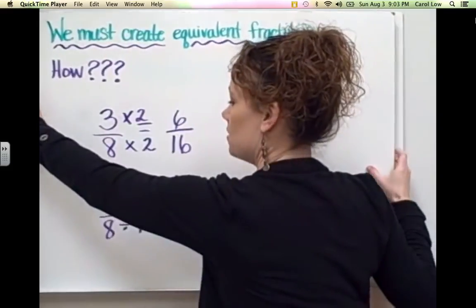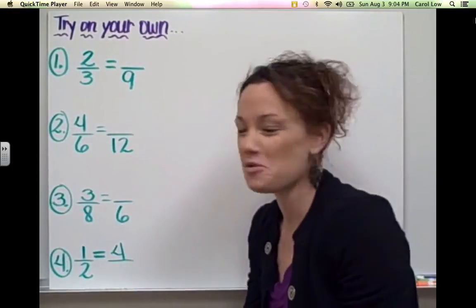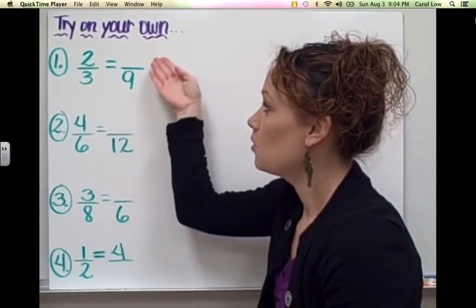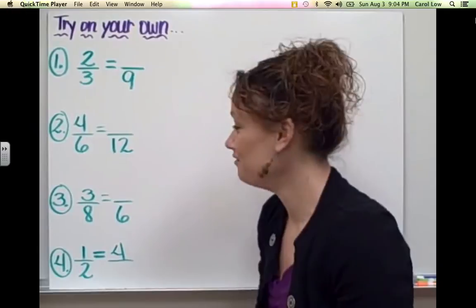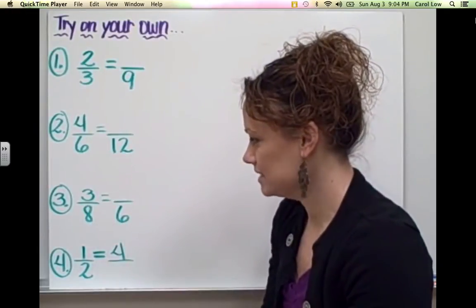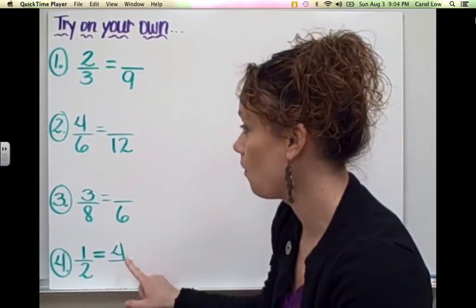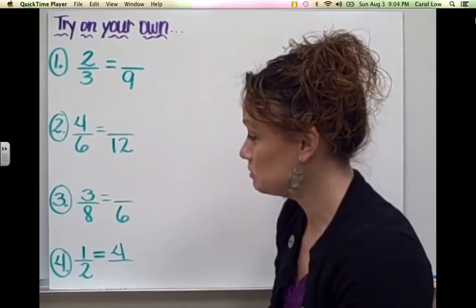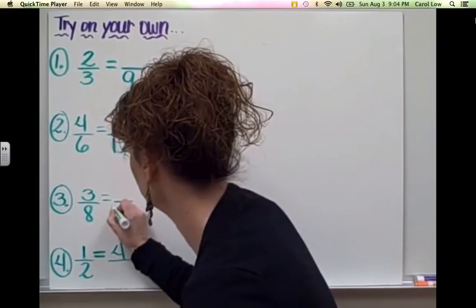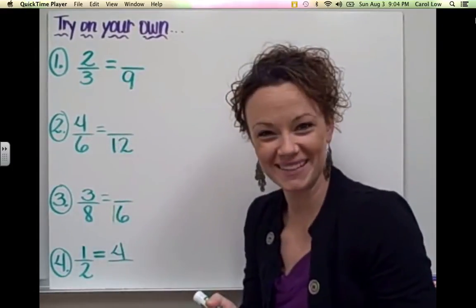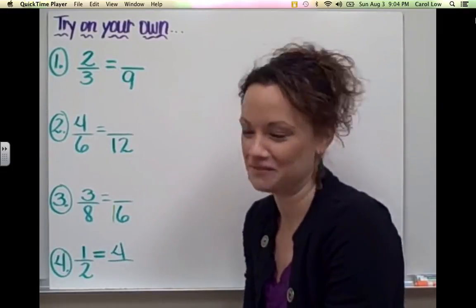It's time for you to try some examples on your own. You may do this in box 3 of your homework sheet. We have 2 thirds being equivalent to something over 9, 4 sixths being equivalent to something over 12, 3 eighths being equivalent to something over 6, and 1 half being equivalent to 4 over something. So try your best with these problems, boys and girls. And you can always review the steps if you need to remind yourself how to find equivalent fractions.